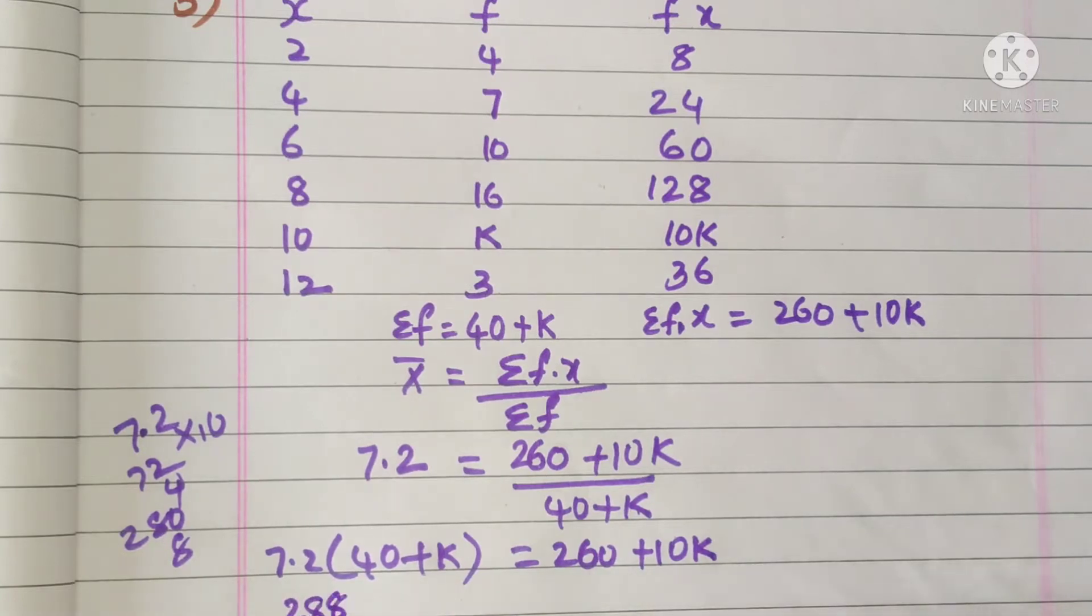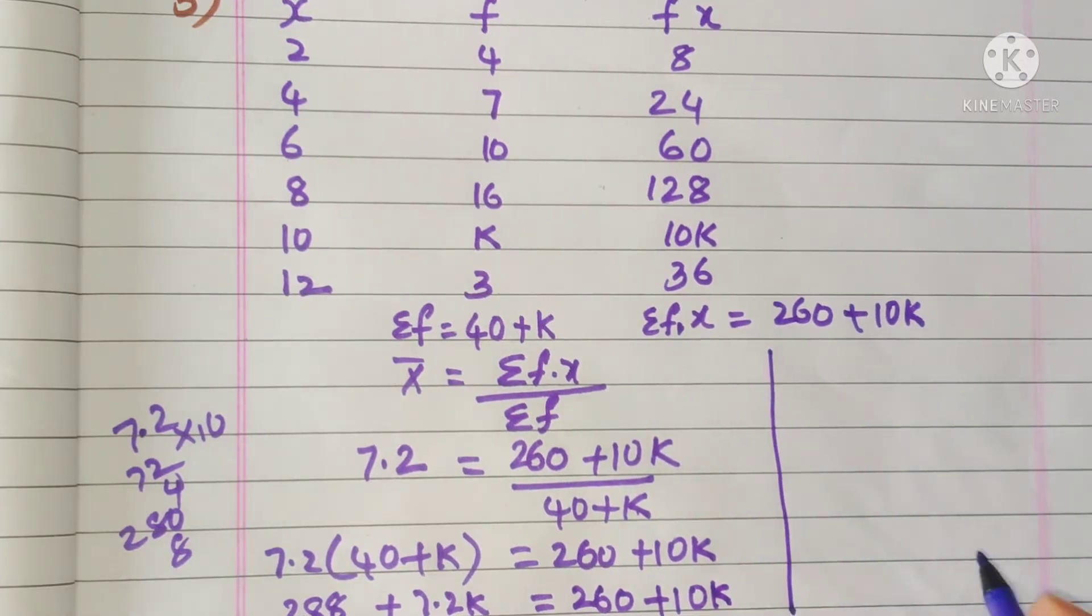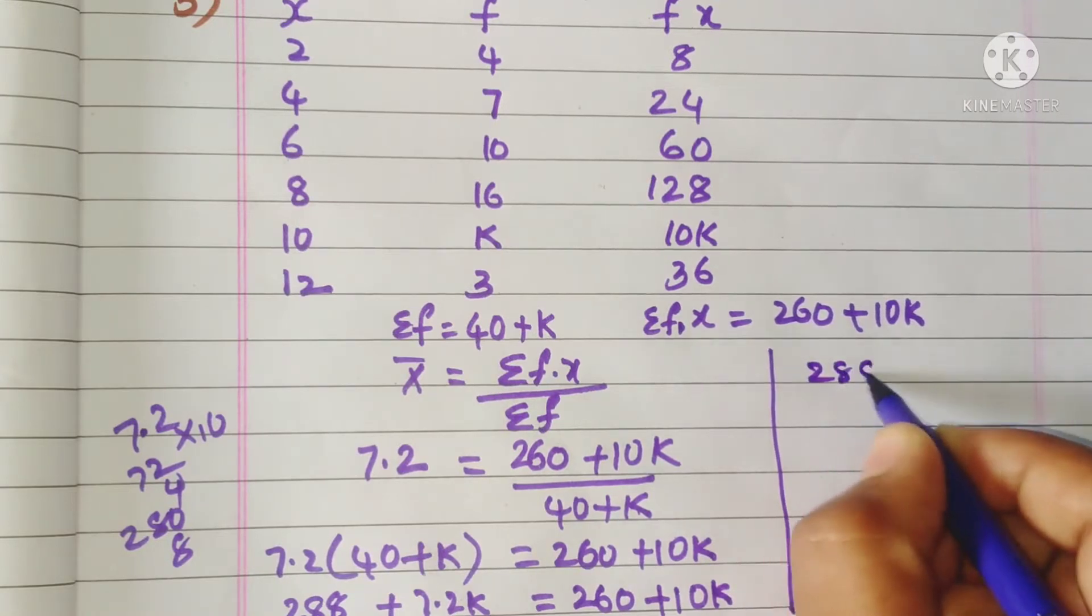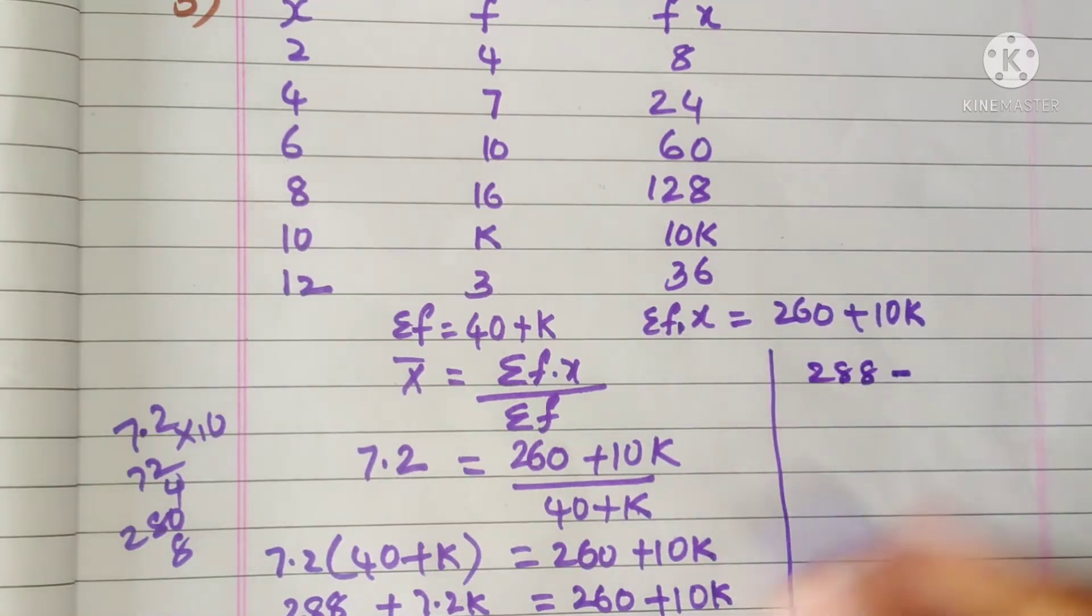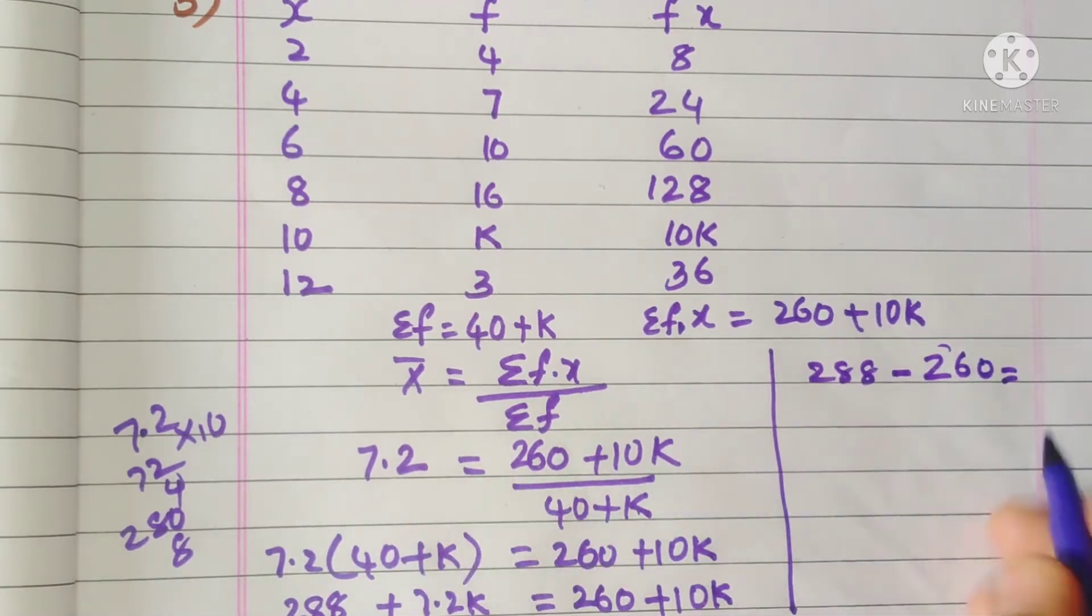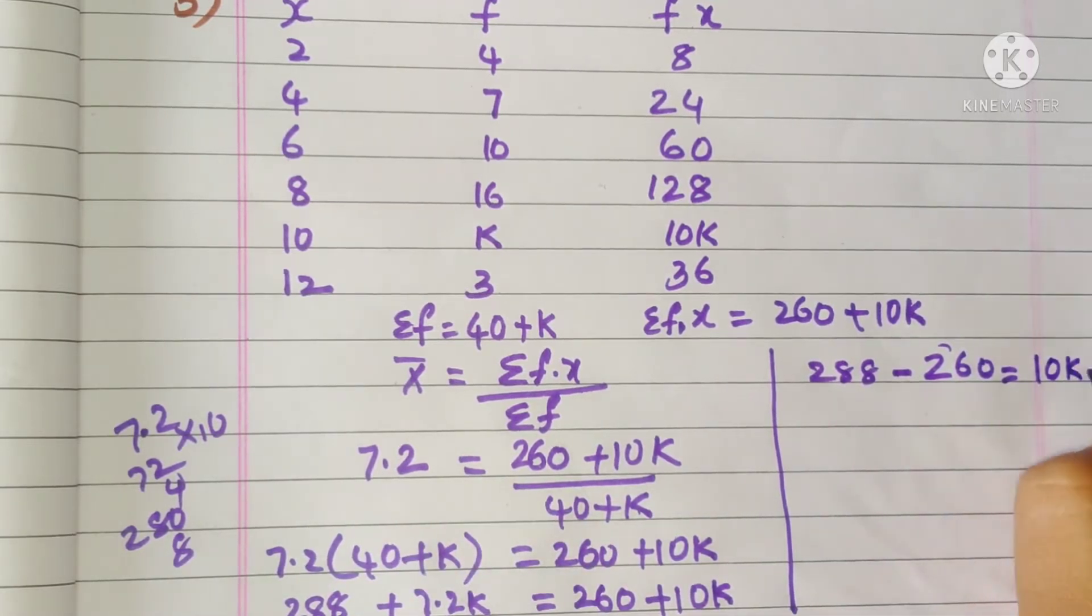288 plus 7.2 into k equals 260 plus 10k. Now after transposing all variables to one side and numbers to one side, 288 minus 260 equals 10k minus 7.2k.